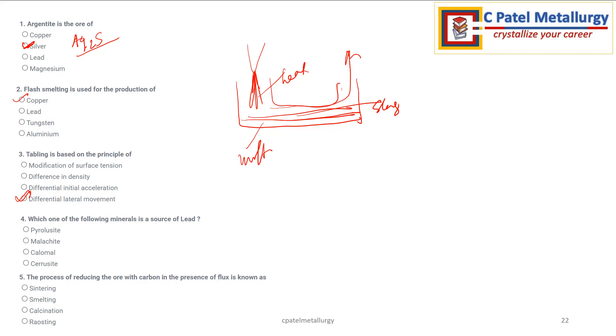Which one of the following minerals is a source of lead. We need to see here for the source of lead, first is pyrolusite. Pyrolusite is for manganese ore, it is in the form of MnO2. Then malachite. Malachite is an ore of copper.